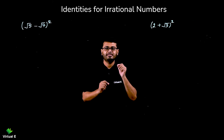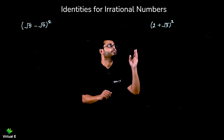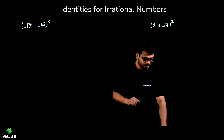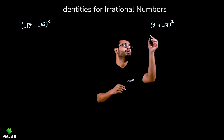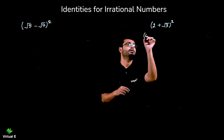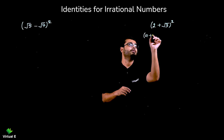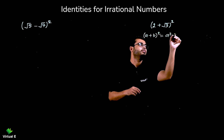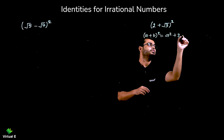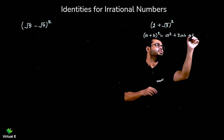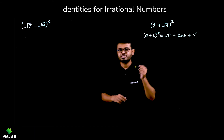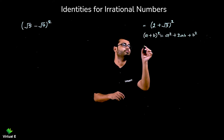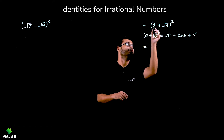Let's start with the very first question: (2 + √3) whole square. How do we solve this kind of question? Remember, this is of the form (a + b)² = a² + 2ab + b². So let's apply the identity here.